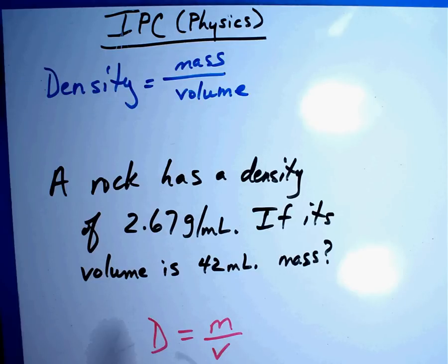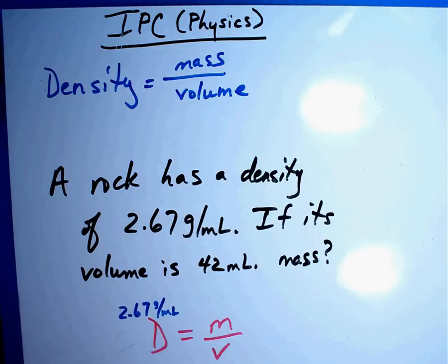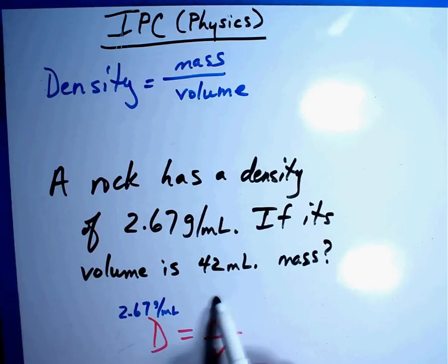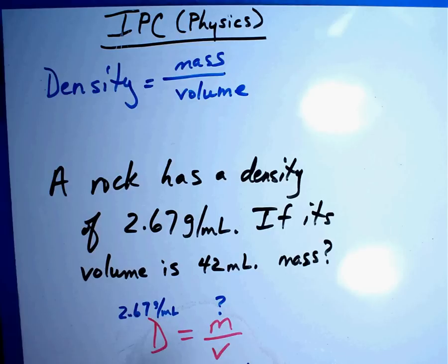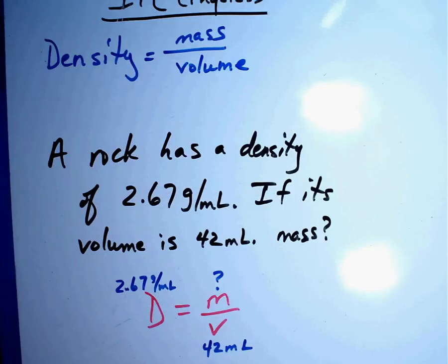Alright, let's put the numbers that we see in the problem and see where they fit. A rock has a density of 2.67 grams per milliliter. So that goes there. Wow, that's interesting. It looks like the answer so far. If its volume is 42 milliliters, what's its mass? Now in math class, sometimes you'll put an X there or a question mark. It really doesn't matter. Either one works. But we're going to try to figure out exactly what answer there. I'm sorry, I drew a little too low. So I put the numbers 2.67 and 42 milliliters.